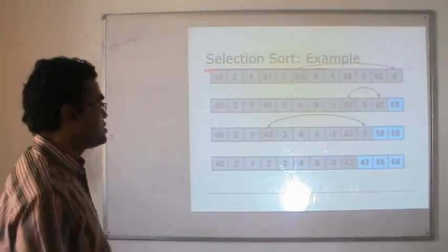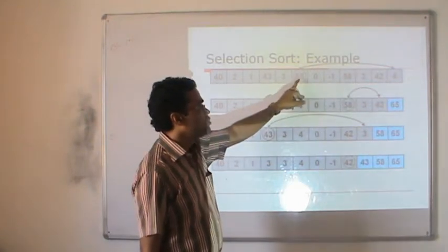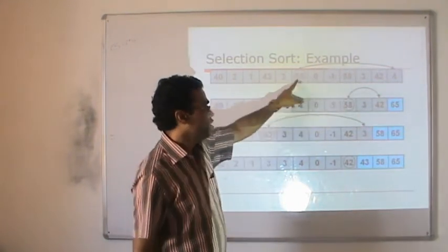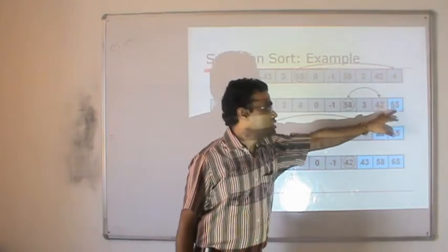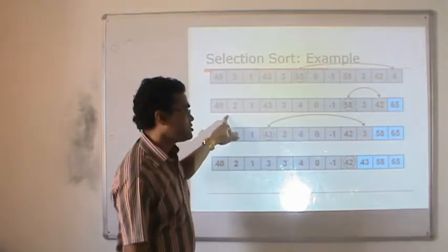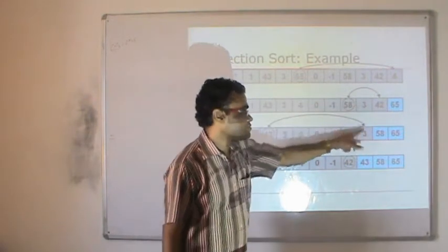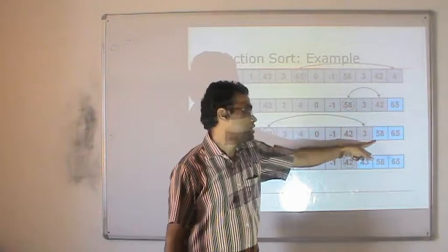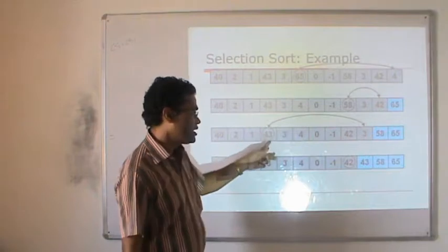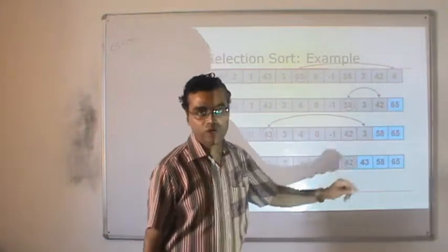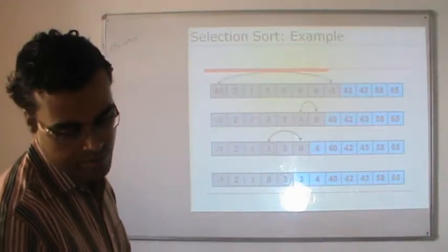Another example: from the data, find the largest (65) and move it to the end. From unsorted, find 50 and move it. Then find 43. We keep going, moving the largest element to its proper position at every iteration, until all data is sorted.